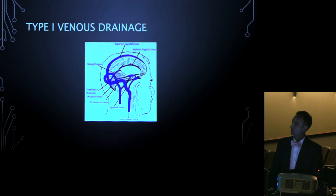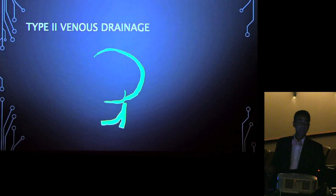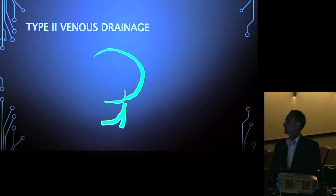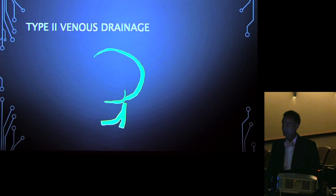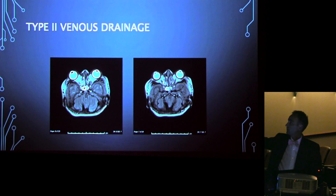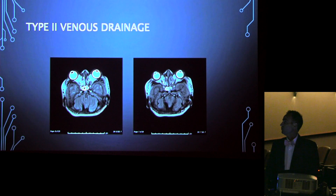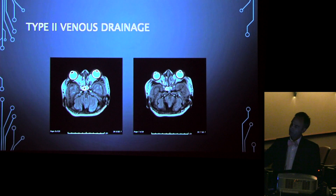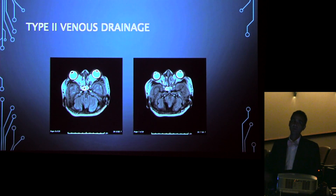Type 2 venous drainage has the sagittal sinus with rudimentary transverse sinuses and a large occipital sinus that splits along the foramen magnum — visible on MRI as two dark lines going down like a V at the bottom of the posterior fossa. If you're doing an extradural operation you don't have to worry about this since these are within the dura, but if you plan to open the dura, those are going to be a problem and you should know where they are.